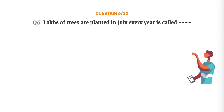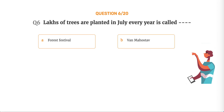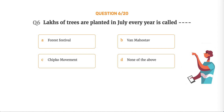Question number 6. Lakhs of trees are planted in July every year in an event called: Option A, Forest festival. Option B, Vanmahotsav. Option C, Chipko movement. Option D, None of the above.